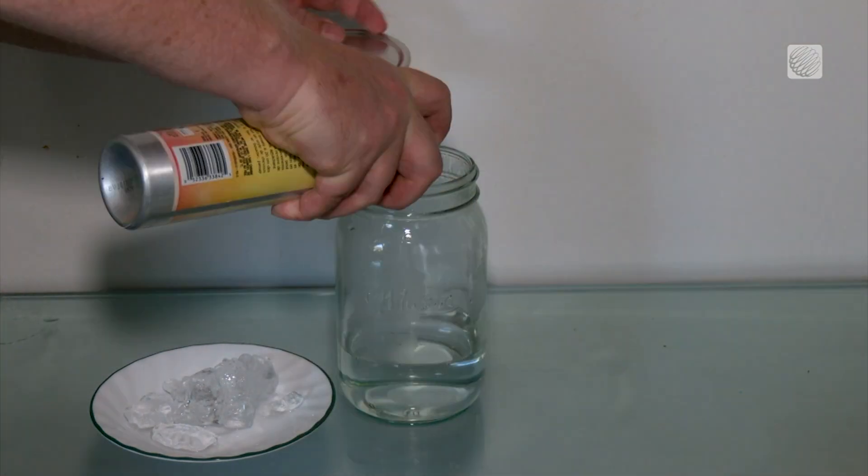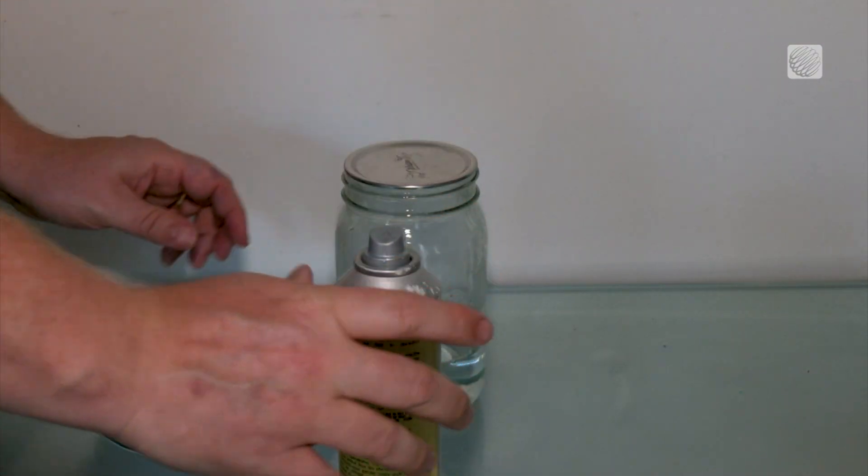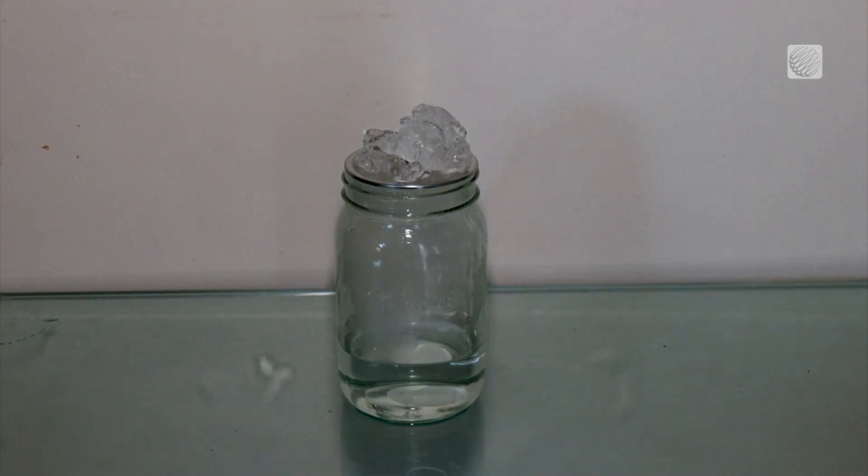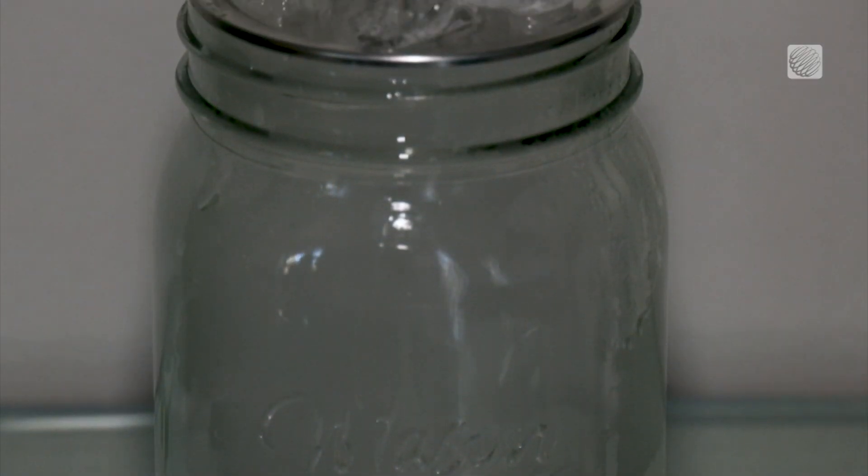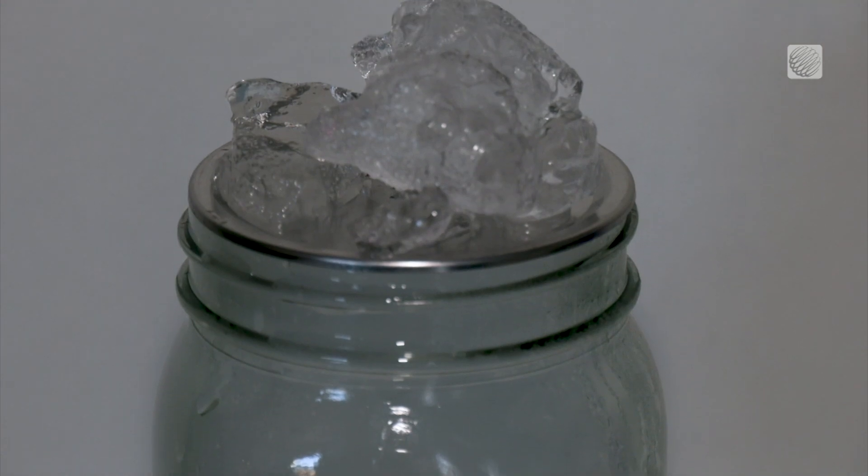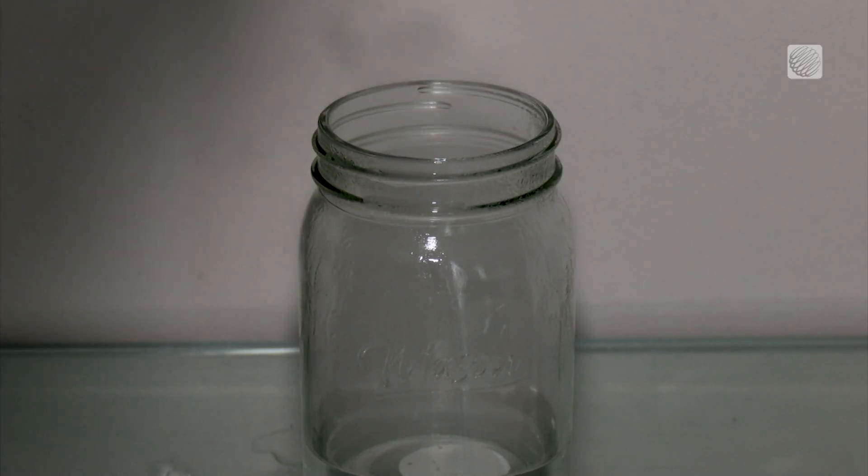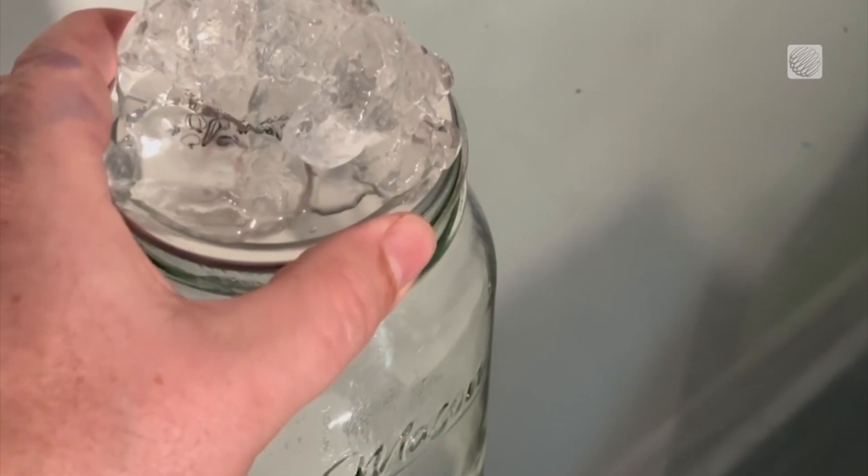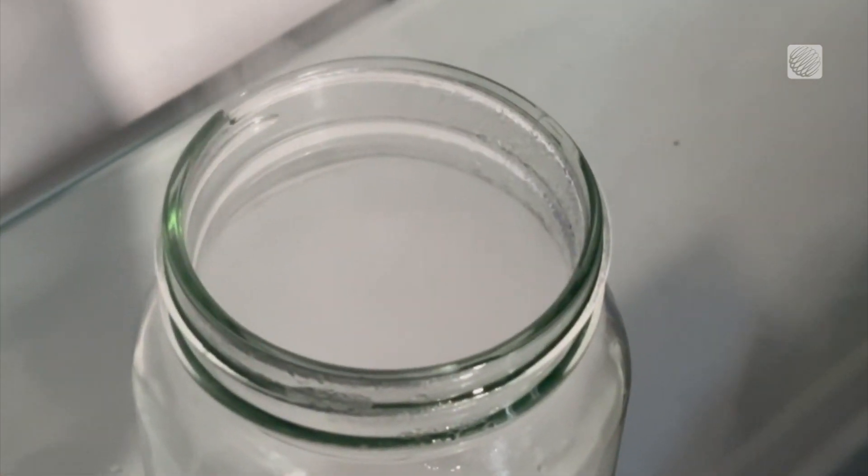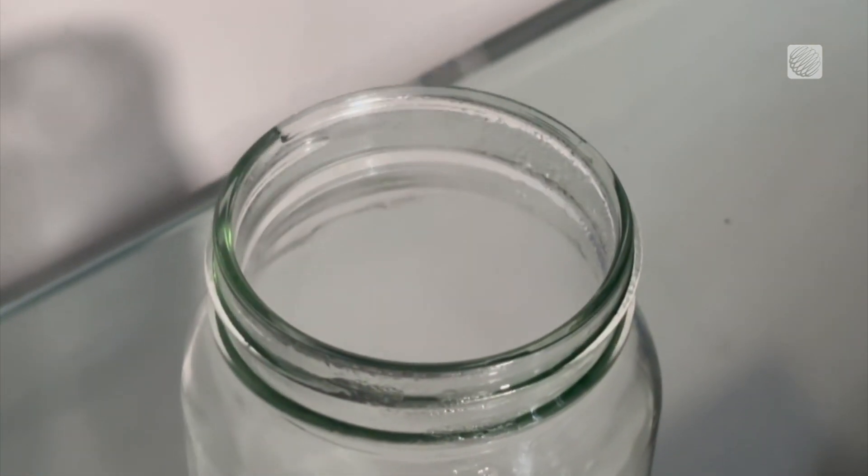Pour the water in the jar and then spray in the hairspray. Then seal the top with the lid covered in ice. The warm water evaporates thanks to the cold air from the ice cubes, and the hairspray has particles primed for condensation. Open the lid and watch in awe as your very own baby cloud escapes for all to see.